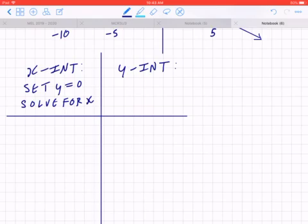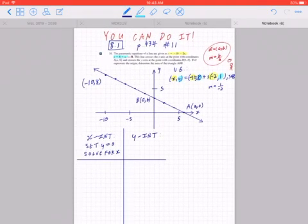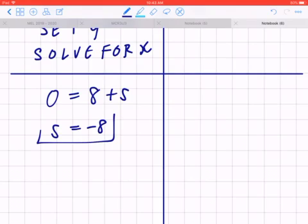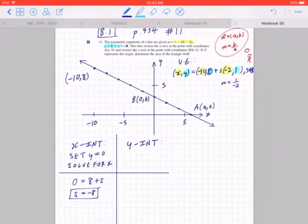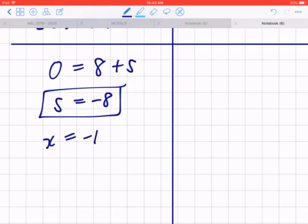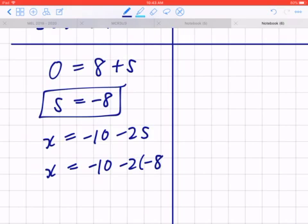If you want to set y to be 0, y is given to be 8 plus s. So 0 equals 8 plus s, which implies that s equals negative 8. Then you go back to the first statement, x equals negative 10 minus 2s, and you plug in negative 8. Negative 10 minus 2 times negative 8, that's going to be negative 10 plus 16, so x is going to be 6.